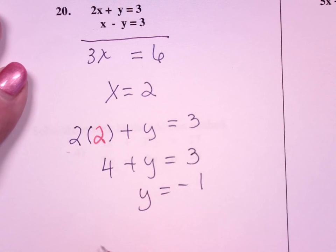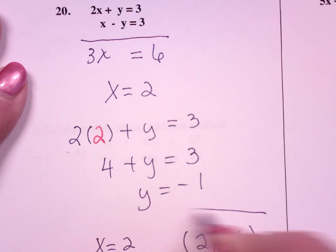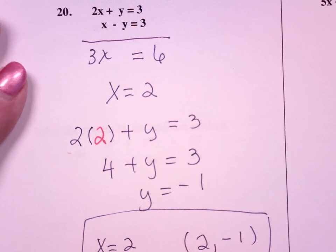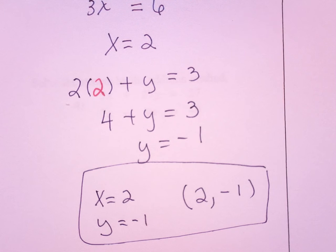So this guy has a solution of x equals 2, y equals negative 1, or the coordinate point (2, -1). So if I were to graph this, I would see that they cross at (2, -1).